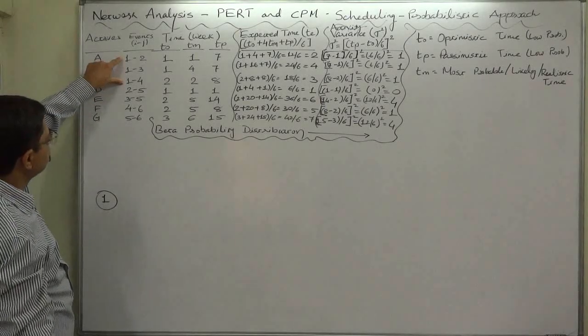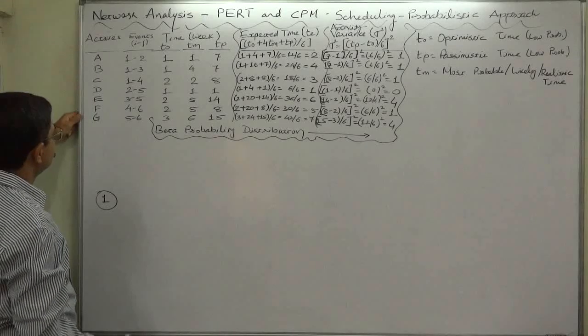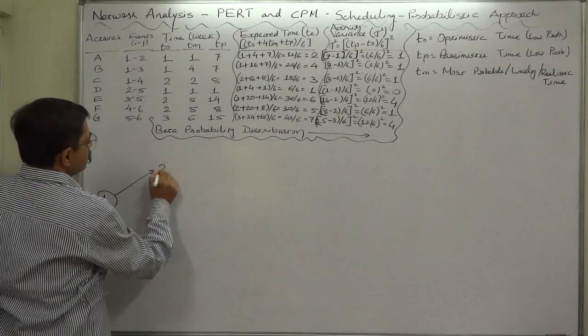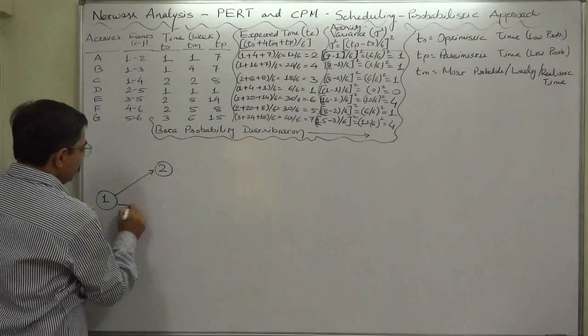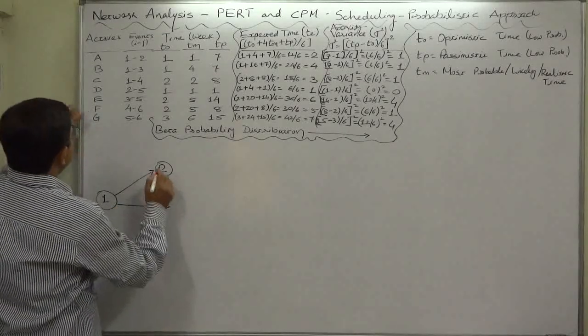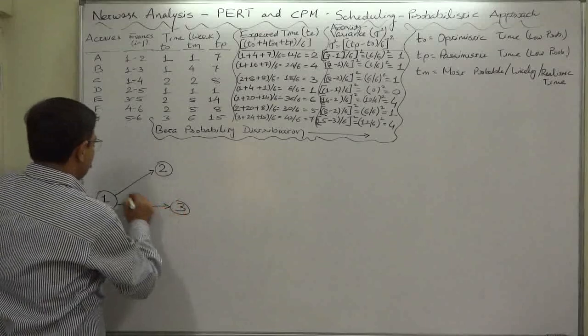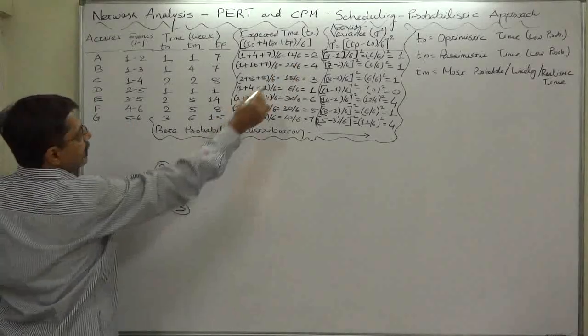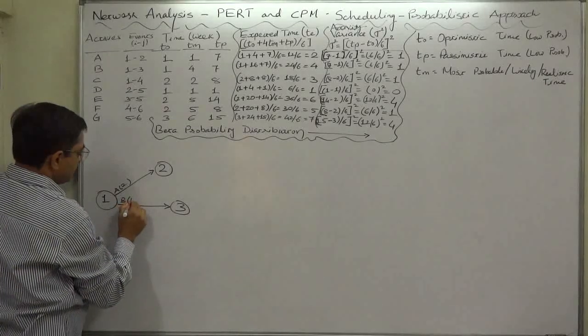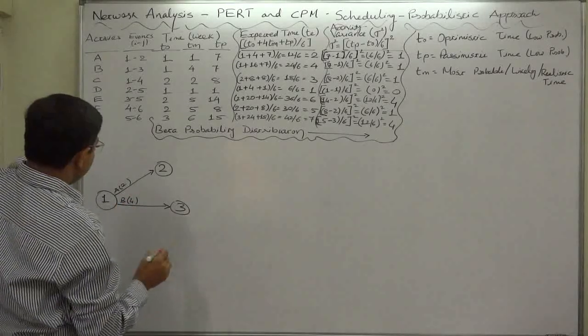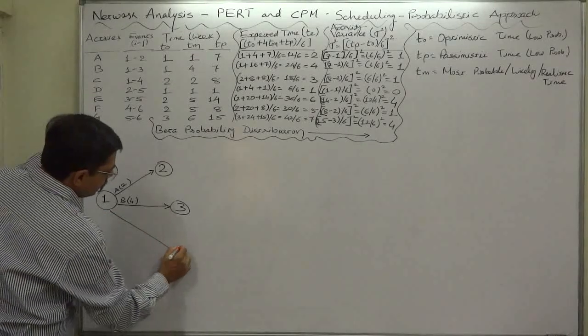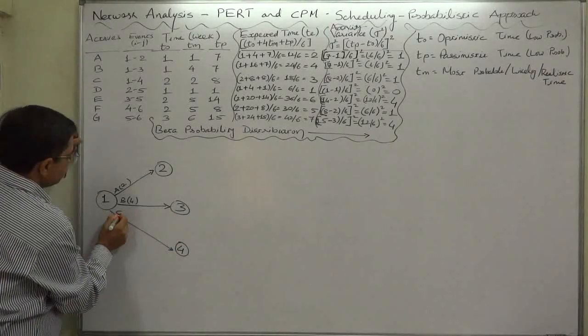Node 1 is the start event and there are three start activities: a, b, as well as c. Activity a is from node 1 to 2, b is from node 1 to 3. Activity a is going to take two weeks, b is going to take four weeks, and c, from node 1 to node 4, is going to take three weeks.